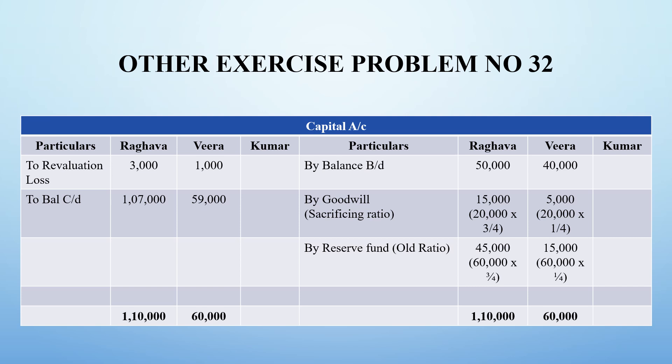The reserve fund is also distributed among old partners since Kumar is entering the business. The reserve fund credit side is 60,000 — Raghava receives 60,000 × 3/4 = 45,000, and Veera receives 15,000. We also have a revaluation loss of 3,400 for Raghava and 1,000 for Veera. The balancing figures give 1,07,000 for Raghava and 59,000 for Veera.